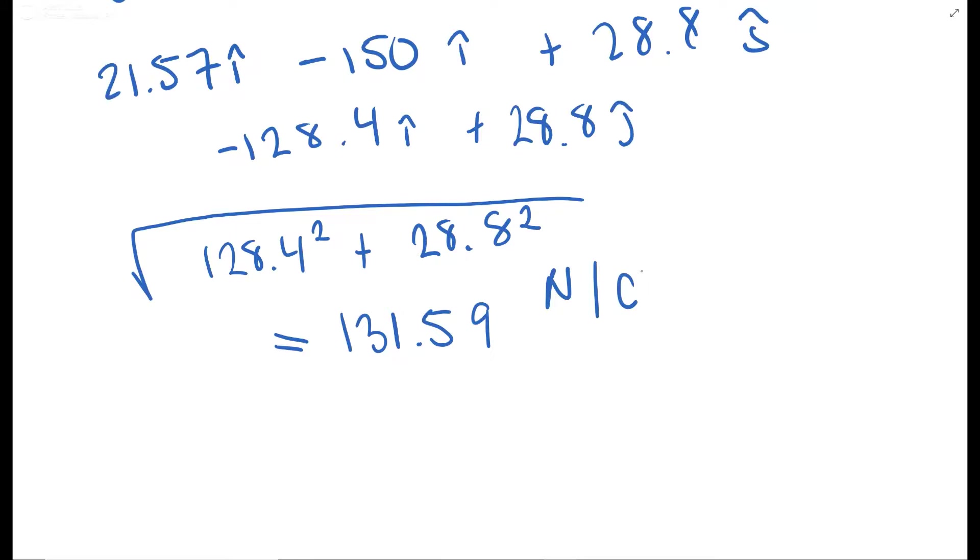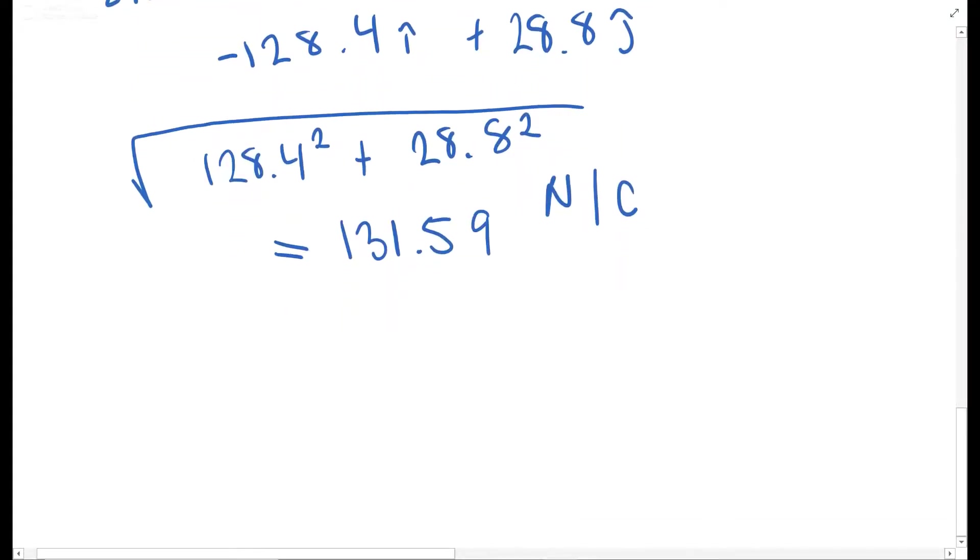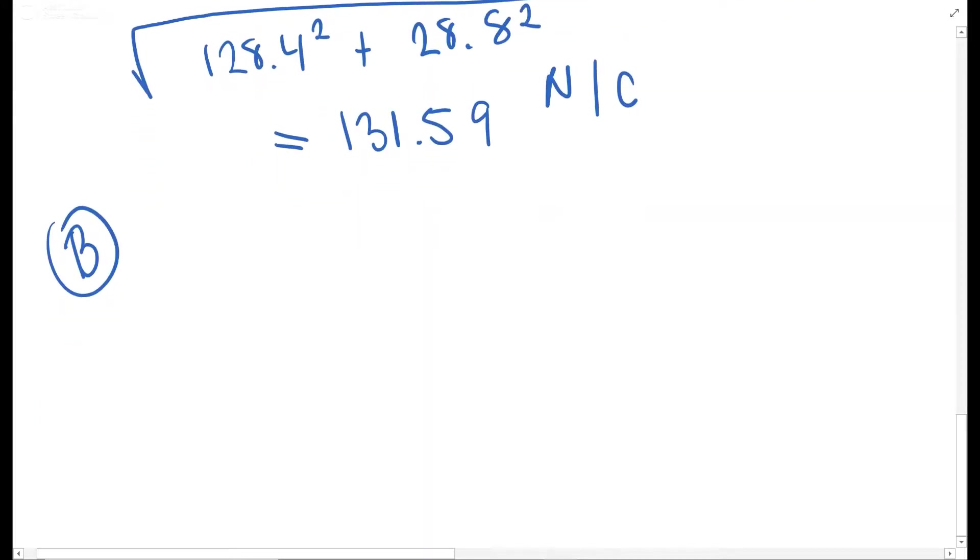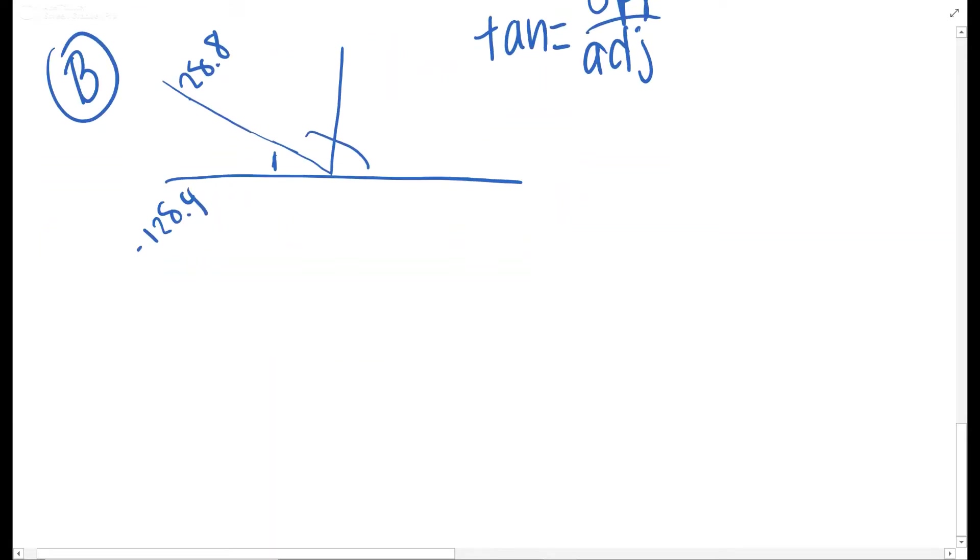Part B is asking to calculate the direction of this field. So for that we are going to use more triangles. We have the negative 128.4 in the x direction and the 28.8 in the y direction. So we have this negative over here and a positive in the y. We're essentially trying to find this direction. To find this angle we can use tangent. Tangent is equal to opposite over adjacent, which in this case would be the 28.8 over the 128.4. So tan inverse of 28.8 over 128.4 gets you 12.64 degrees.